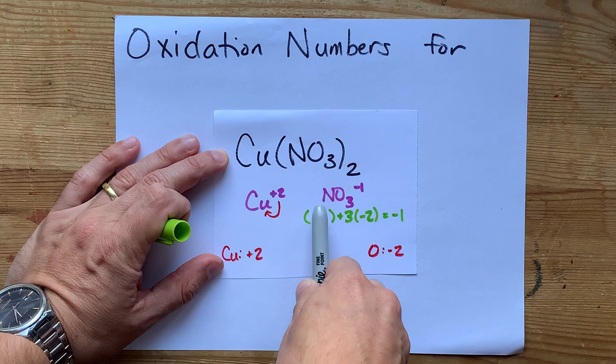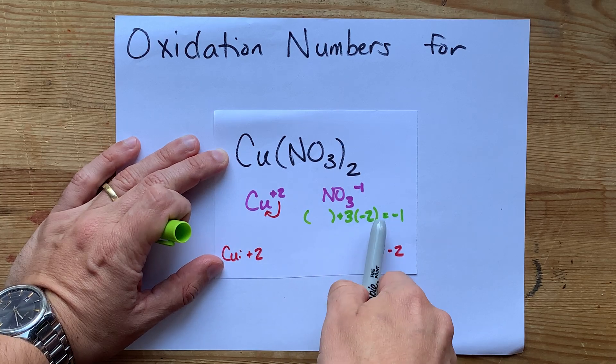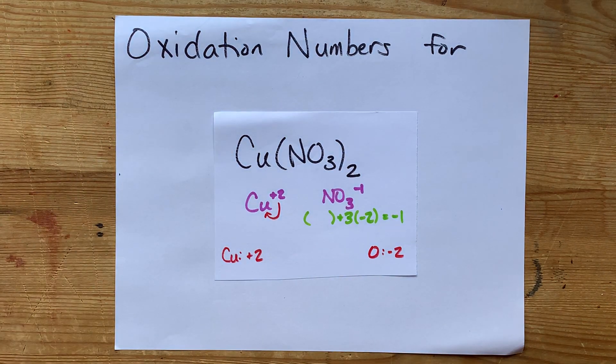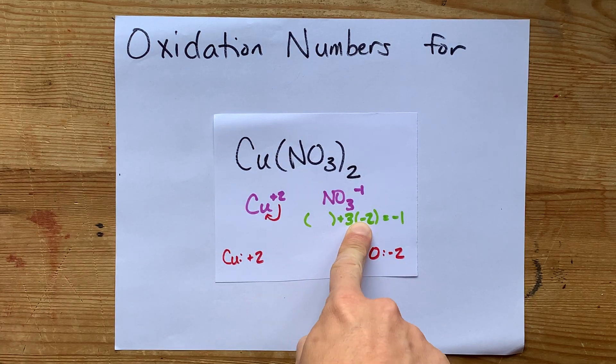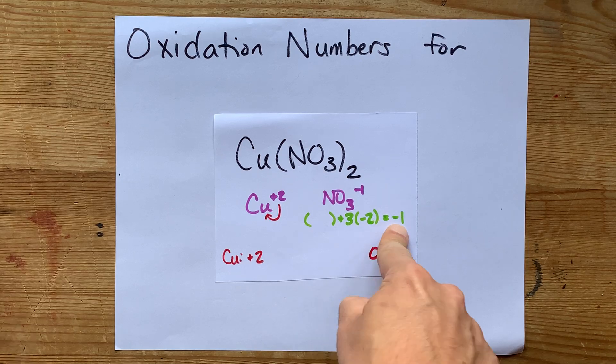So, something plus 3 negative 2s will have to leave us with negative 1. Now, that means something minus 6 has to equal negative 1.